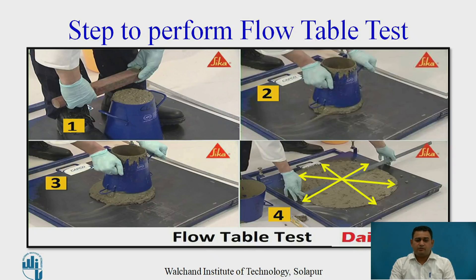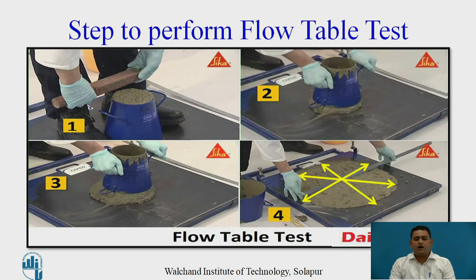We will now see how the steps are carried out. In the first picture, the concrete is filled in two layers and leveling is done at the top so that excess concrete is removed. In the second picture, the mold is lifted vertically upward. In the third picture, it is completely lifted upward. After lifting, in the fourth picture, we observe that the concrete has spread after the rise and drop of the base plate. The concrete is spread after rising and dropping 15 times in 15 seconds, and we observe its diameter is greater than the base diameter of the mold.